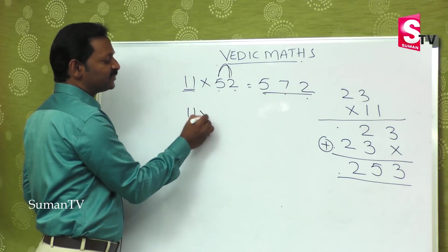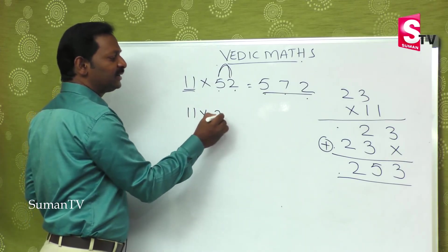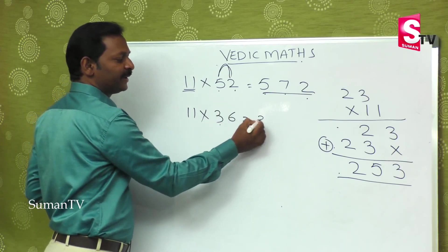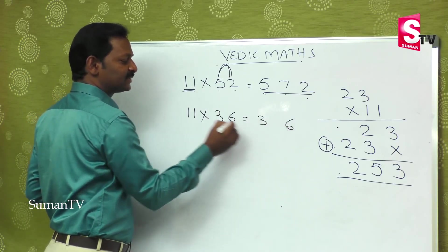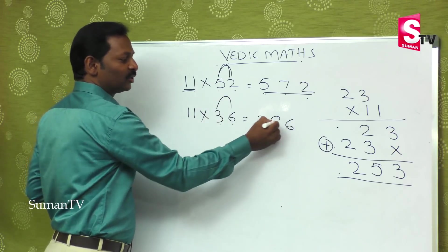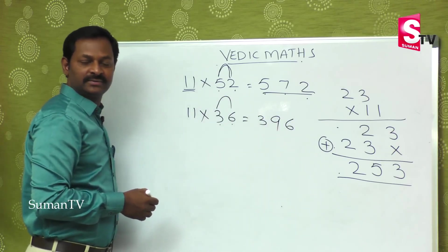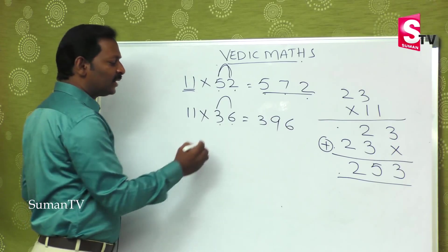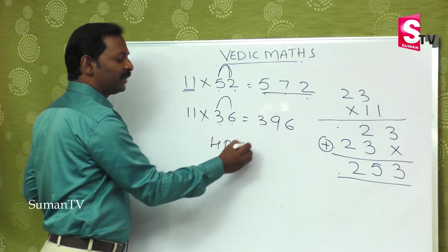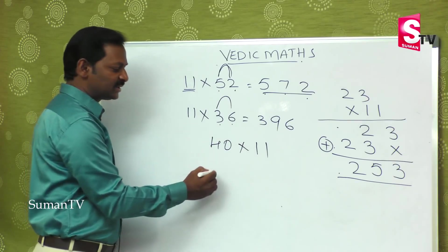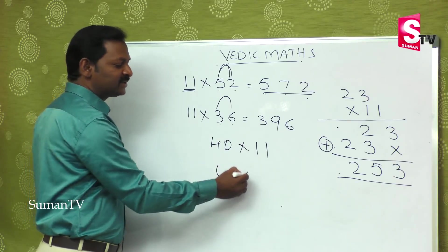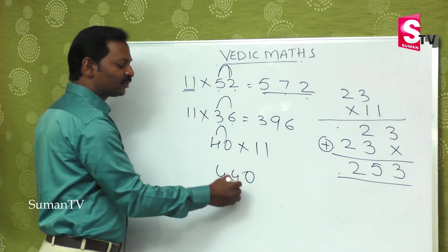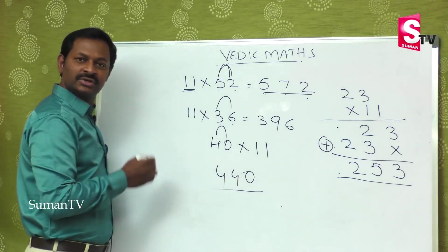11 is multiplied by 36. What will you do? First number is 3, last number is 6, and when you add you get 9 in between — so the answer is 396. That is multiplication with 11. Now 40 is multiplied by 11: first is 4, last digit is 0, add 4+0 that is 4, so the answer is 440. So this is very simple.